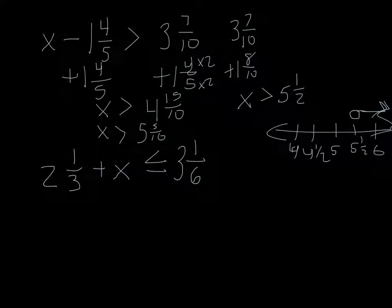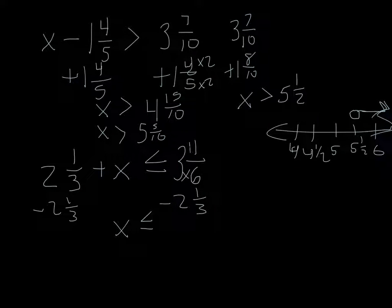Now, on this one at the bottom, we have addition, so to get the stuff to the other side, we would have to subtract 2 and 1 third. That's going to give you x is less than or equal to the result of this subtraction. Which, for me, I'm going to take this off to the side here. I'm going to convert these to impropers. I'm going to get 19 over 6 minus, that would be a 9, 10 over 3.